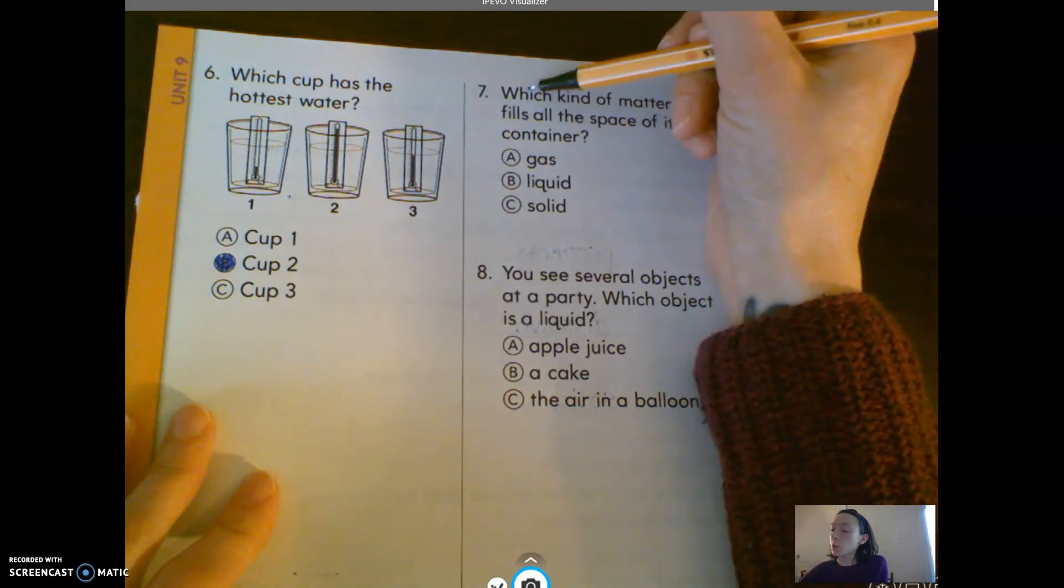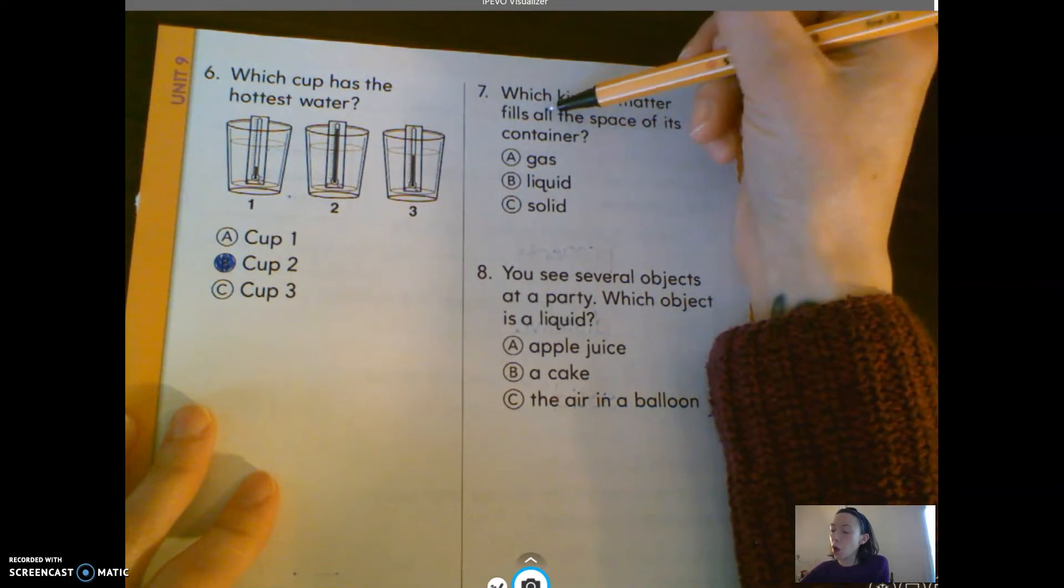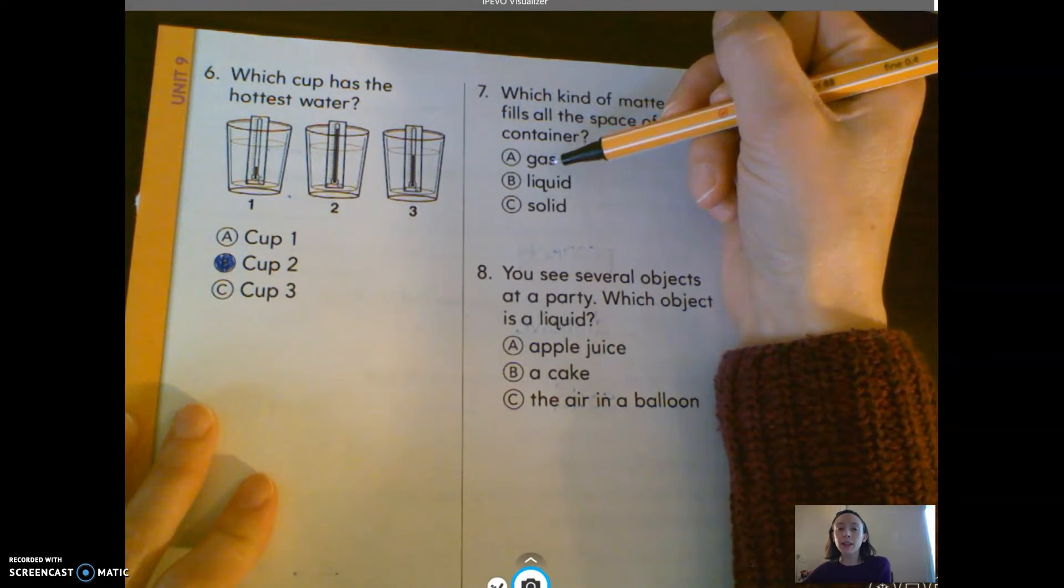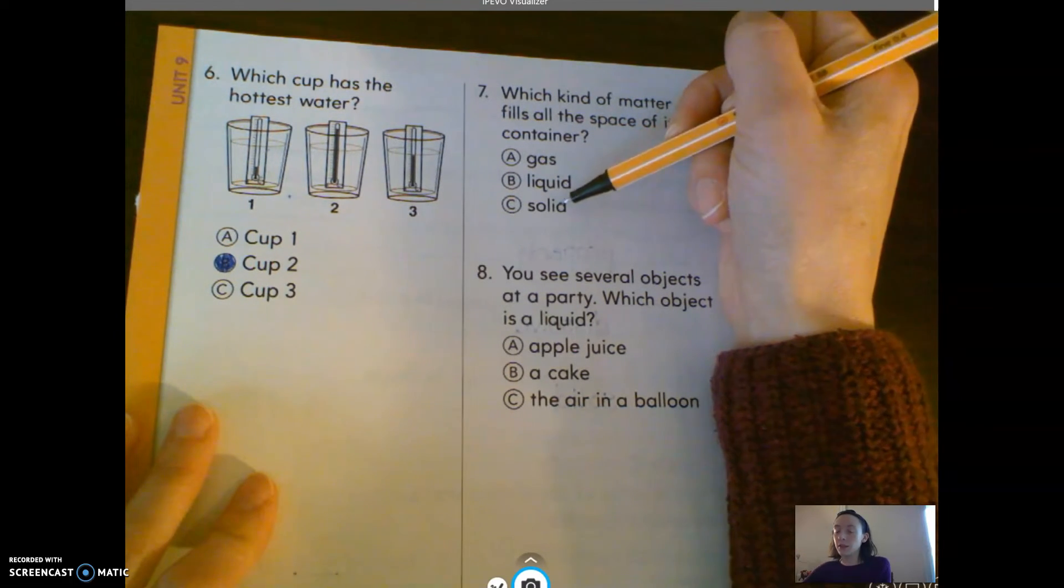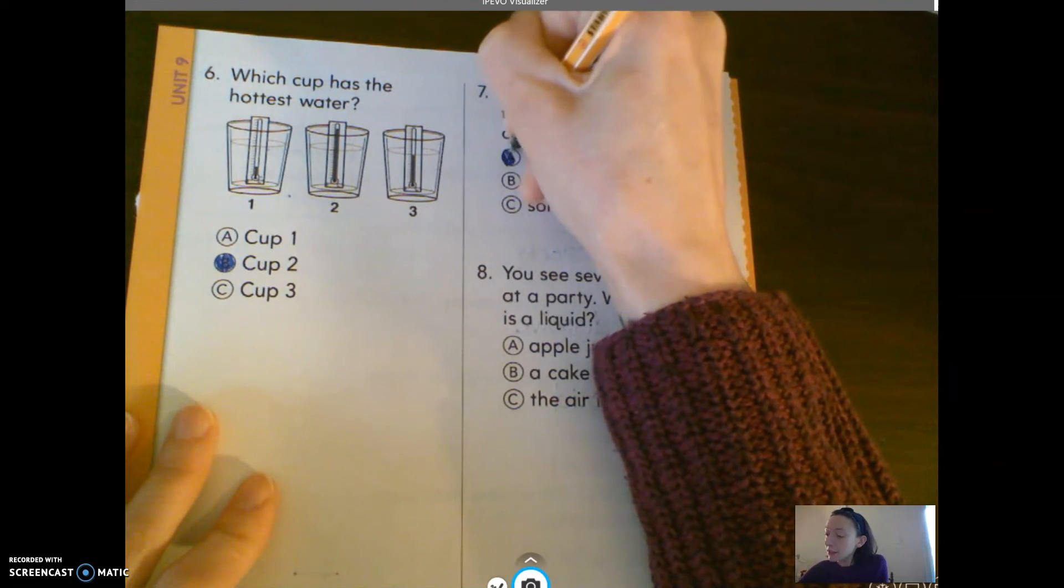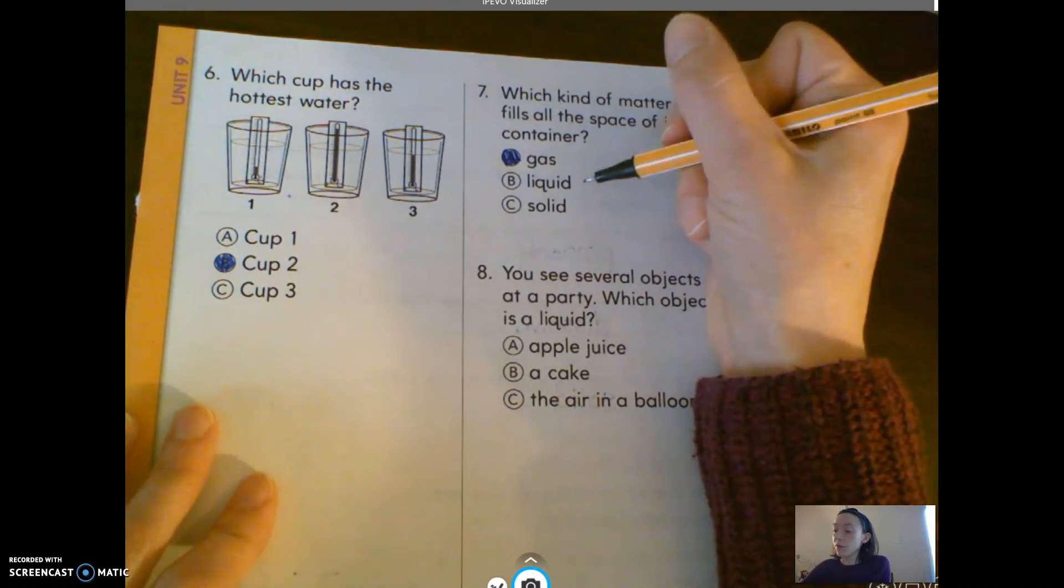Number seven: which kind of matter fills all the space of its container? A, gas. B, liquid. C, solid. That would be A, a gas.